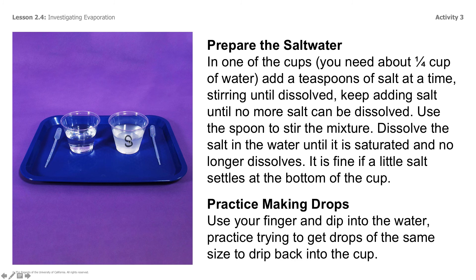The first thing you're going to do is prepare the salt water. In one of the cups — you can see I labeled mine — put about a fourth of a cup of water. Add teaspoons of salt one at a time, stirring until they're dissolved. Keep adding teaspoons of salt and stirring until no more salt can be dissolved — that means it's saturated. There might be a little bit of salt that settles at the bottom, but it's mostly dissolved. You'll notice it looks different from the other cup with no salt — it's a little cloudy. That means you have really good salt water.